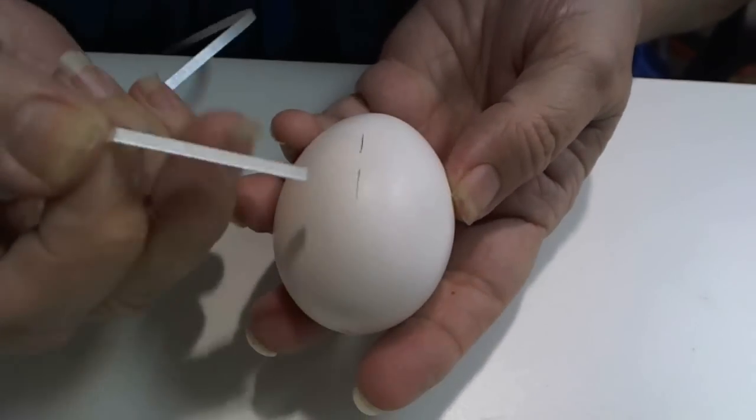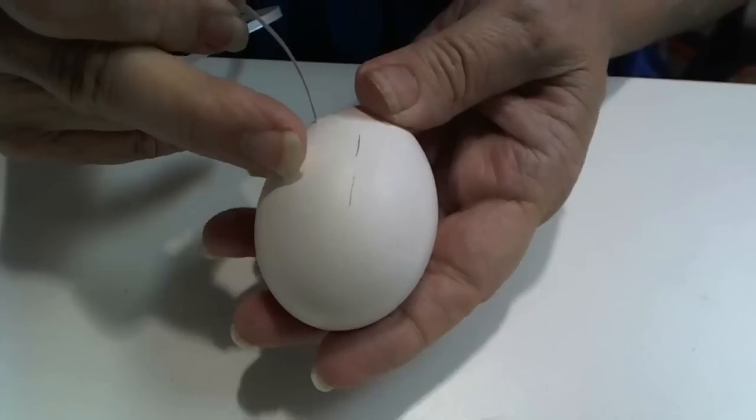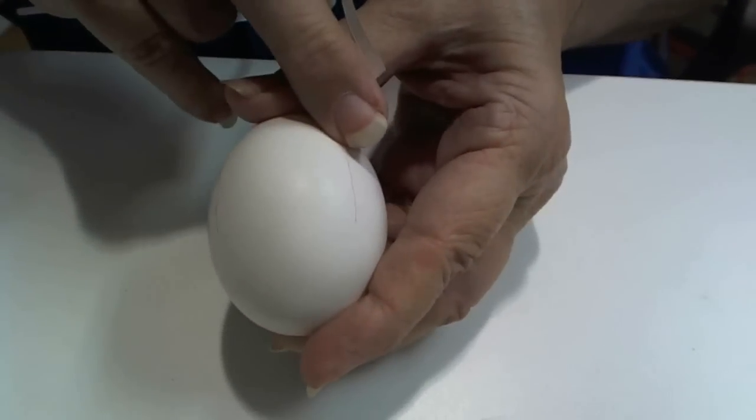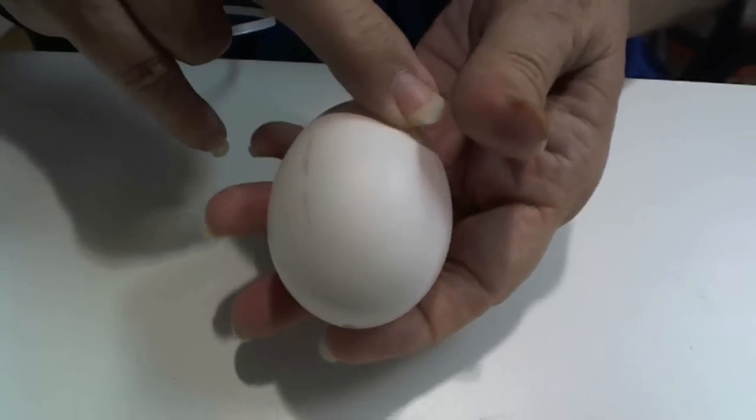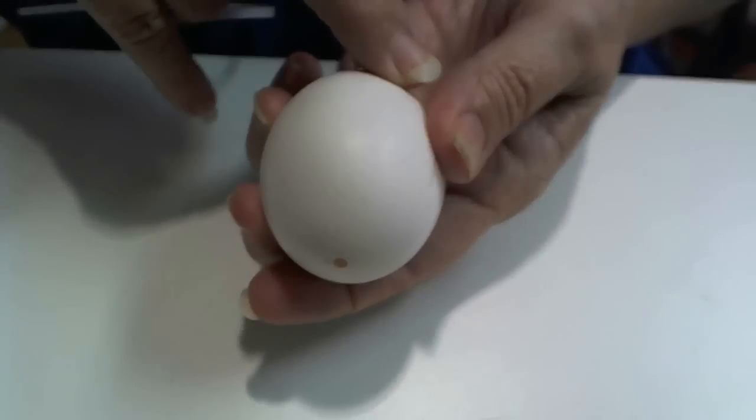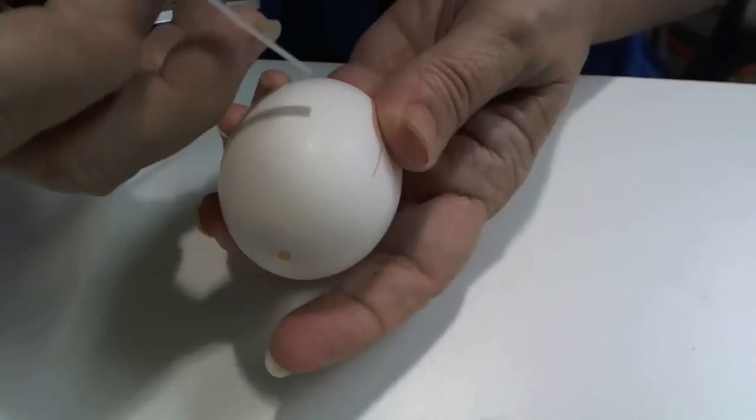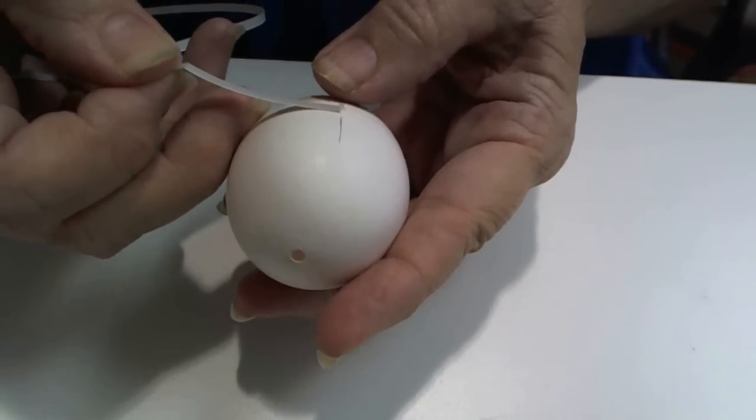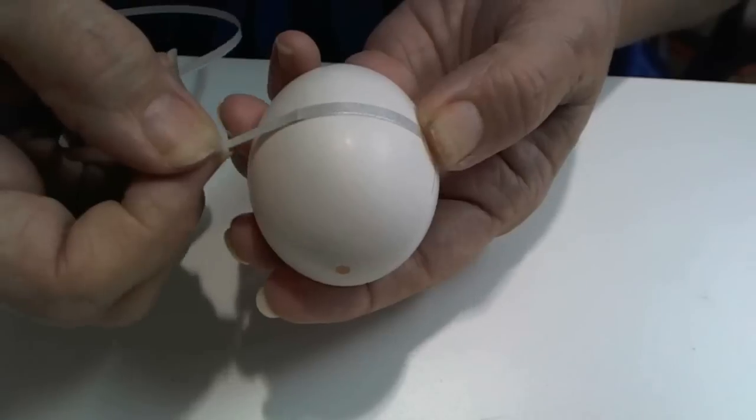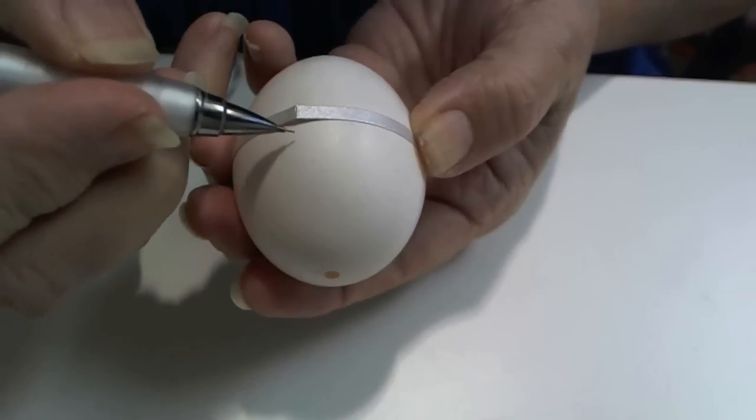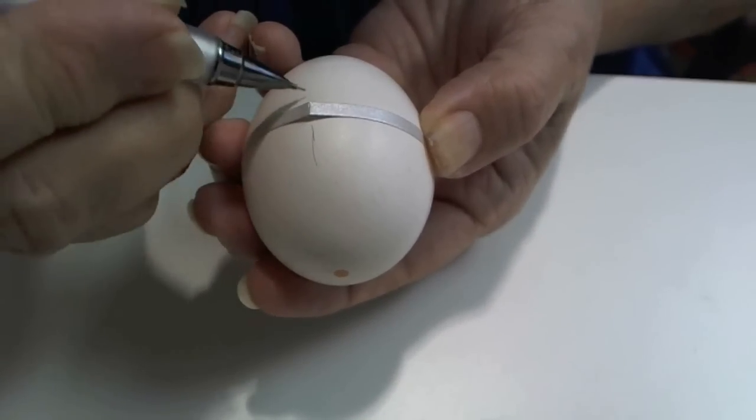This time we're going to turn the egg over. So we have the first mark, the second mark, the third mark. But we need the fourth mark. And this is how we do this. Again we find the line, lay the paper down. And here's our fourth mark.